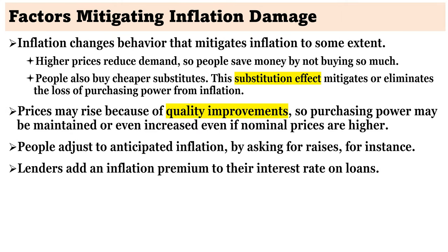There are also factors that mitigate inflation damage. Higher prices reduce demand, so people save money by not buying as much. People also buy cheaper substitutes. This substitution effect mitigates or eliminates the loss of purchasing power from inflation. Prices may rise because of quality improvements, so purchasing power may be maintained or even increased even if nominal prices are higher. People adjust to anticipated inflation by asking for raises. Lenders add an inflation premium to their interest rate on loans to compensate them for the increased inflation.